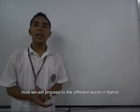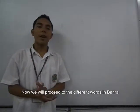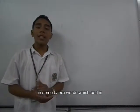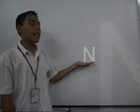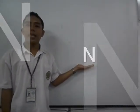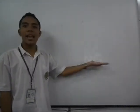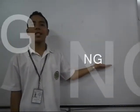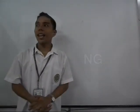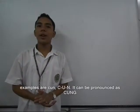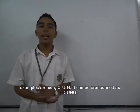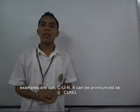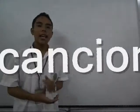Now we will proceed with the different words in Bara. In some Bara words which end in N, some of it can be pronounced as NG or just the same. Examples are Kun, C-U-N, it can be pronounced as Kung. Kien, Tieng.